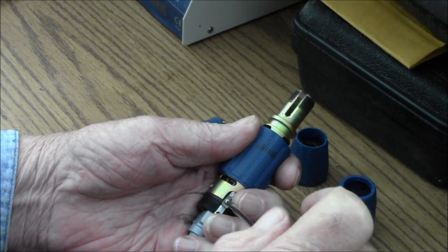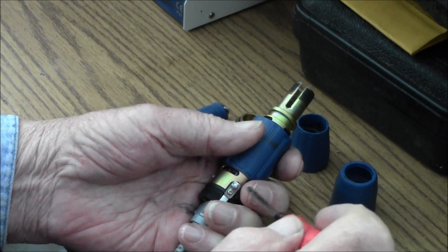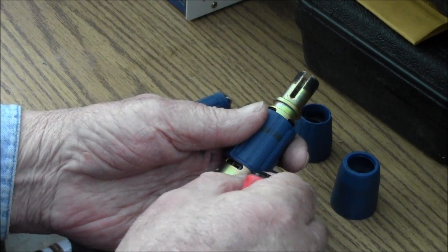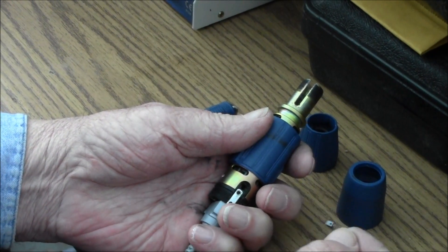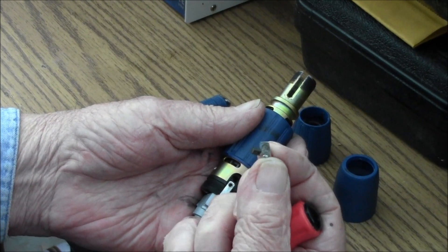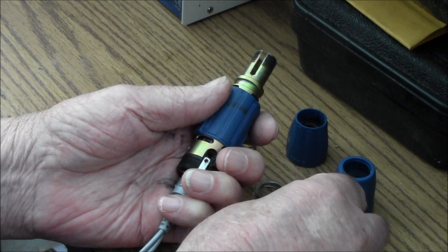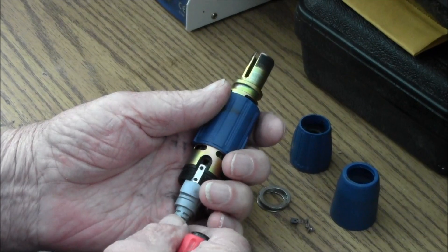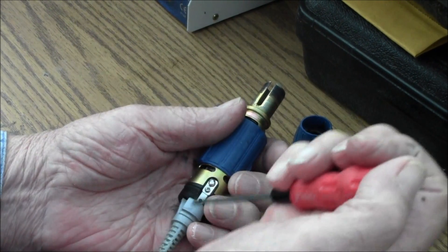Be sure you're working over a surface where if you drop these screws you can find them. This is one of the motor brushes. They're interchangeable so you don't have to worry about which one's right and left and all that.